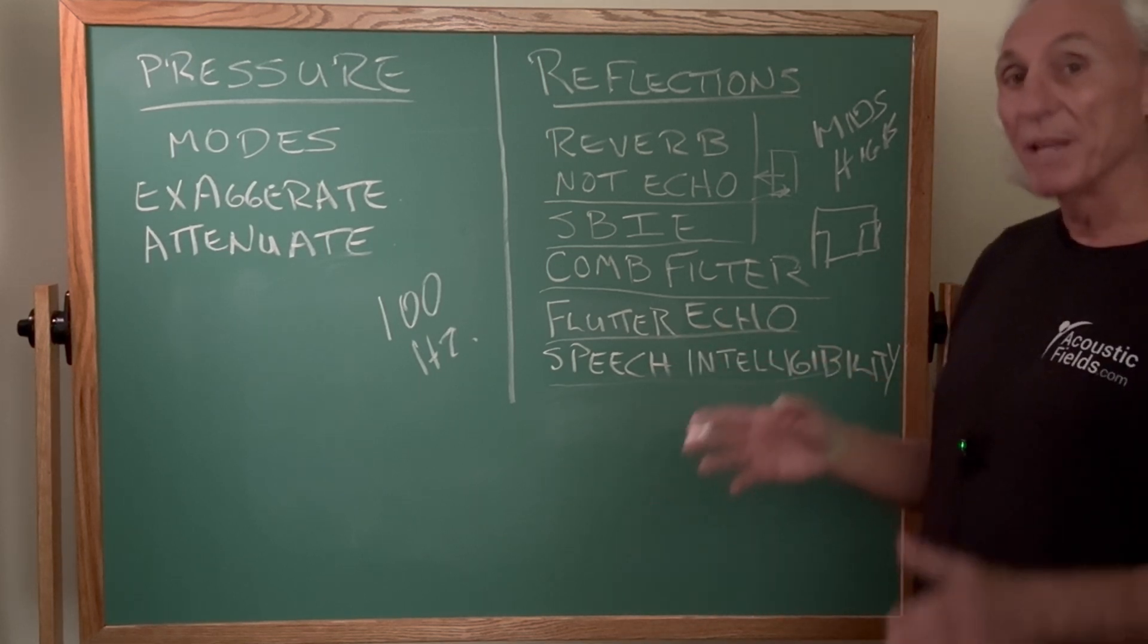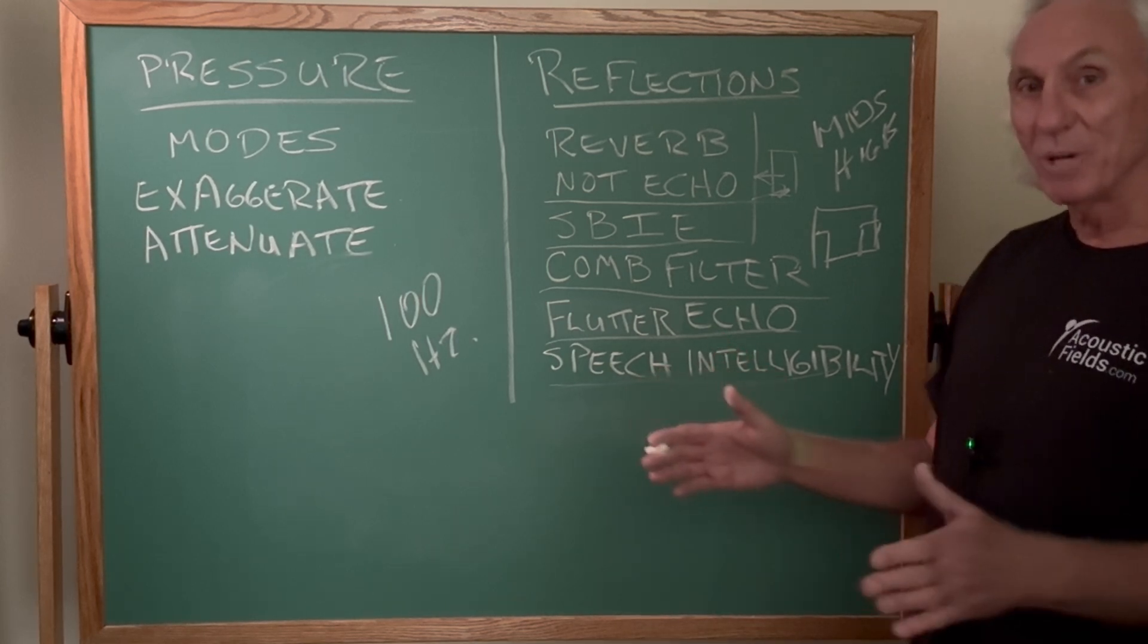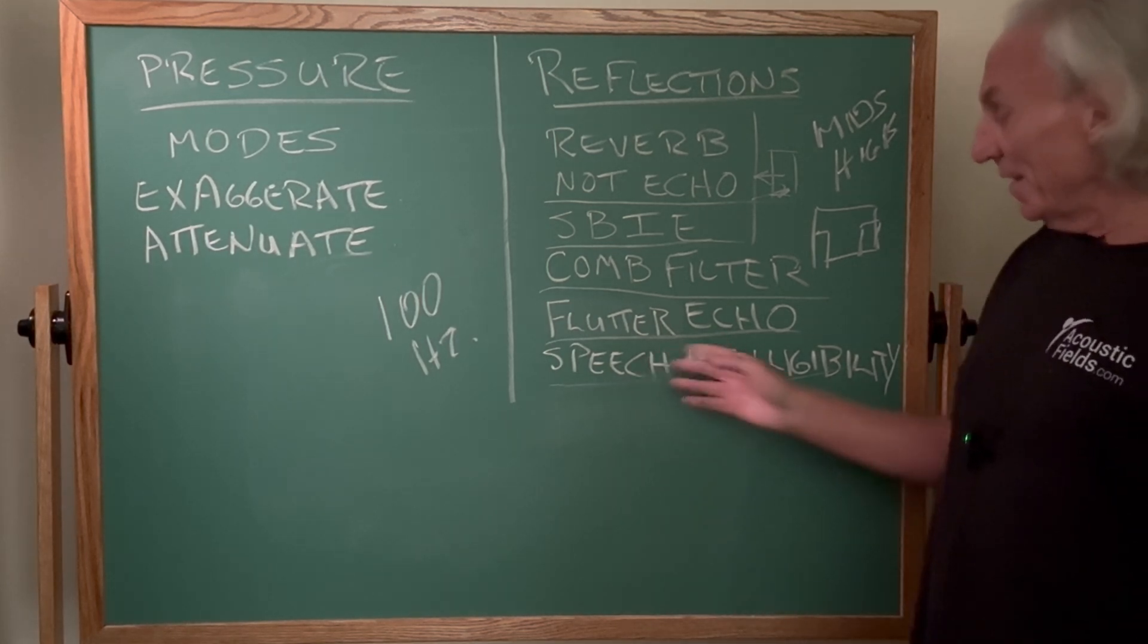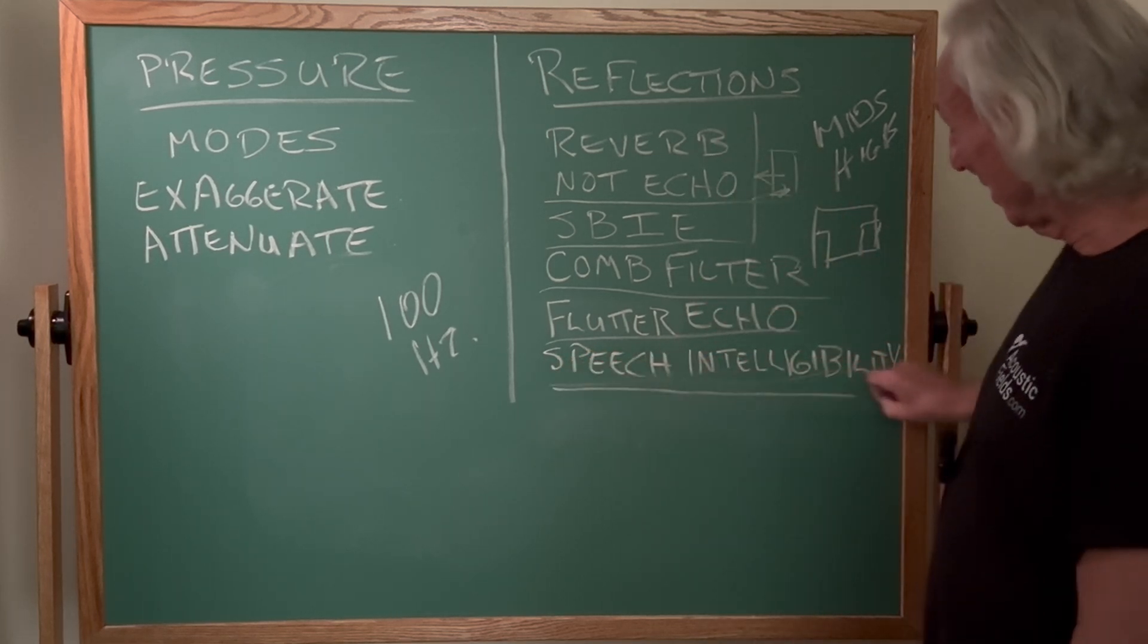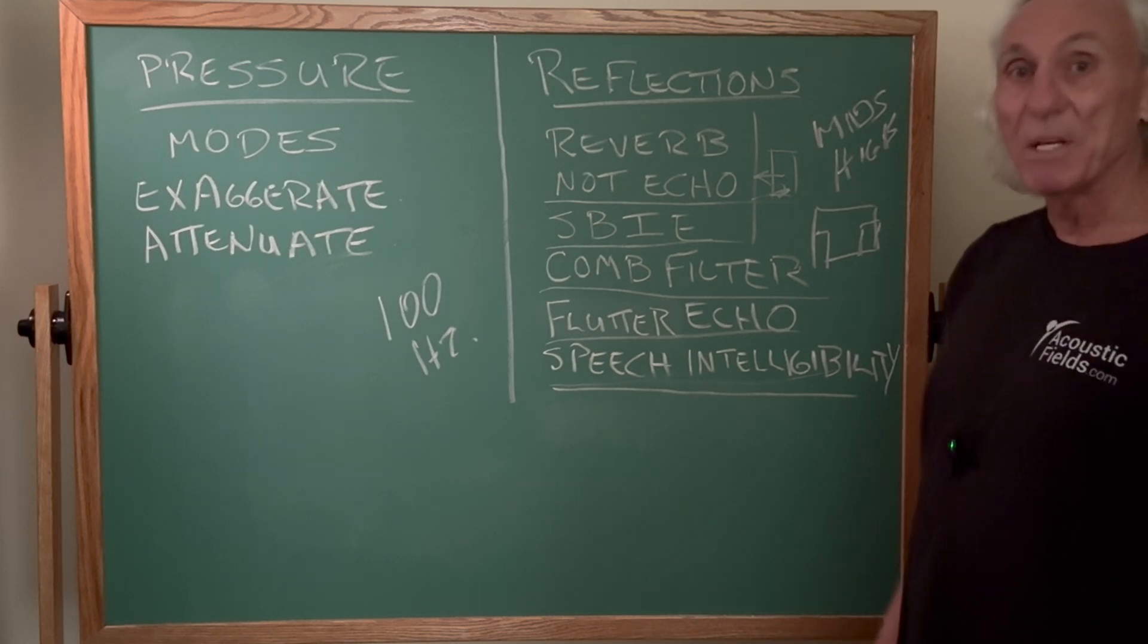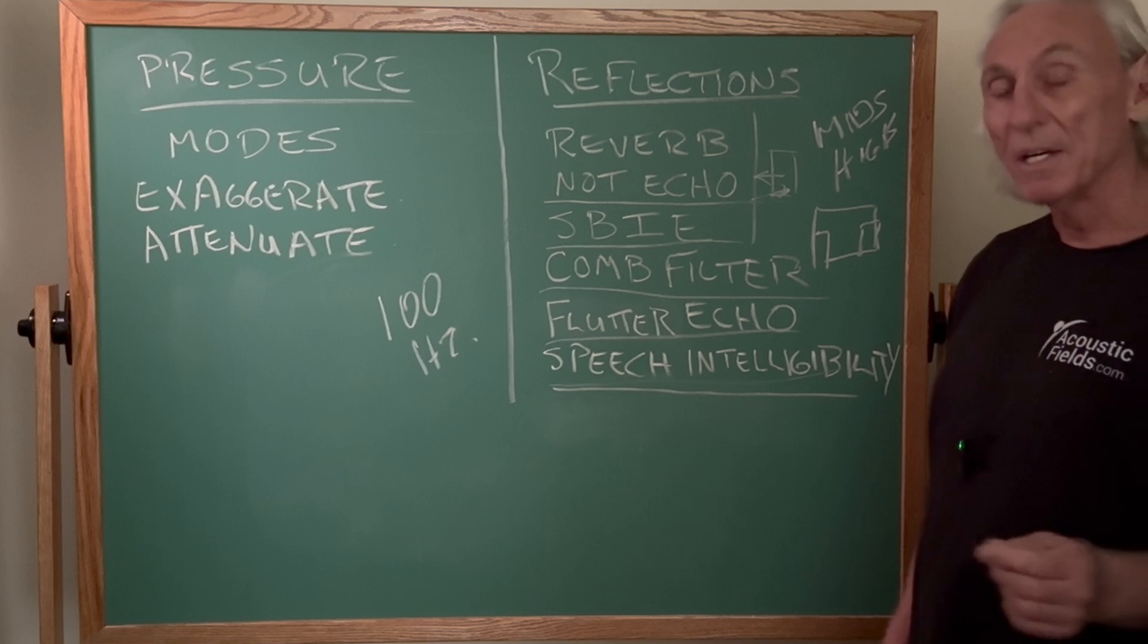Flutter echo. That's another problem. Now, that actually is echo, but it's echo between two objects, if you will. And then, of course, all of these distortions here have an impact on speech intelligibility, which is defined as how many words we can hear in a sentence.